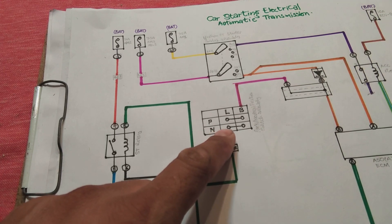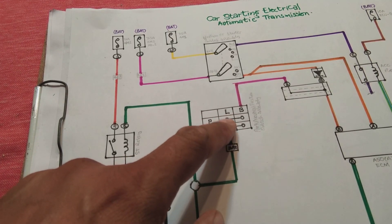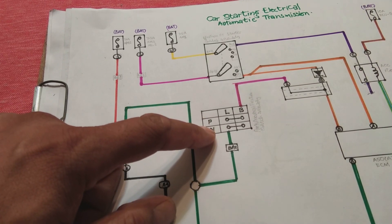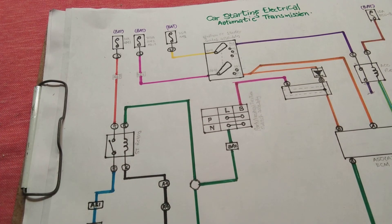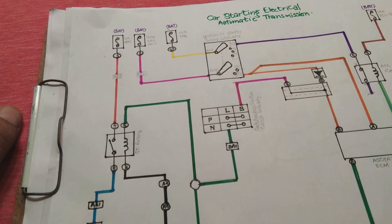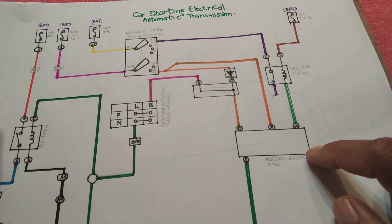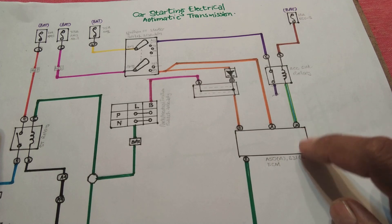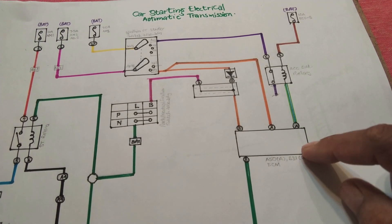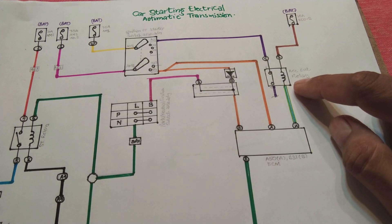There is also the park/neutral switch, located on the automatic transmission. This switch tells the system which position the transmission is in. You can start the car only in Park or Neutral; in Drive, Reverse, or any other gear, you cannot start the car — this is an important safety feature. Additionally, there is the ECU (also called ECM), which is not directly involved in the starting system but is shown in the wiring diagram purposely and will be discussed in detail.